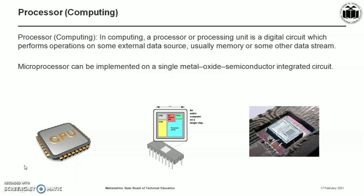In computing, a processor or processing unit is a digital circuit which performs operations on some external data source, usually memory or some other data stream. The CPU is the brain of a computer — it takes the input data, processes it, and gives the result. It follows the instructions of computer programs. A microprocessor can be implemented on a metal oxide semiconductor integrated circuit.